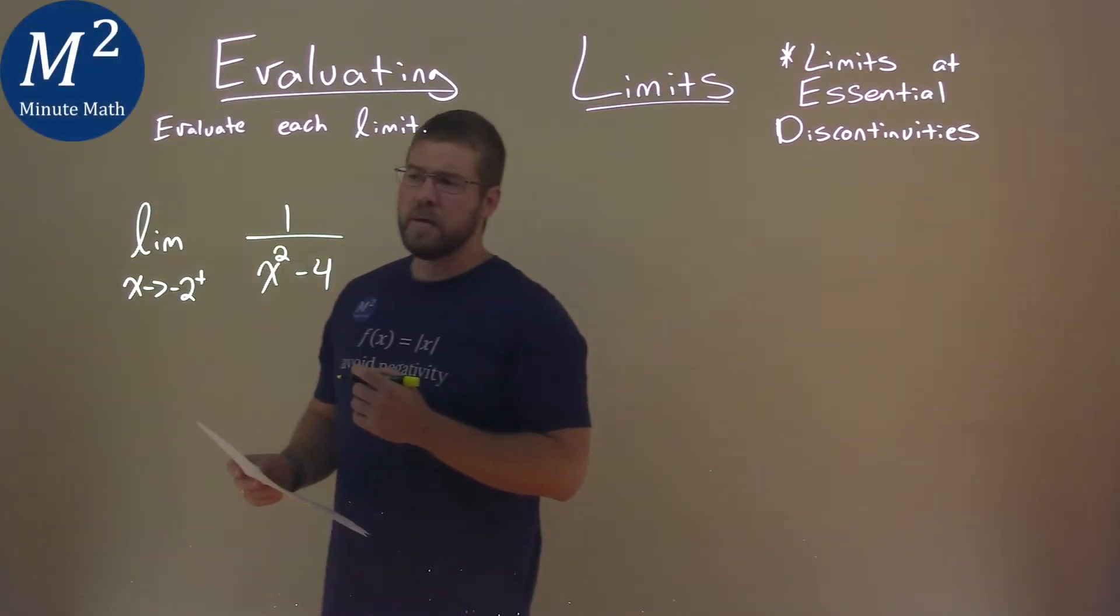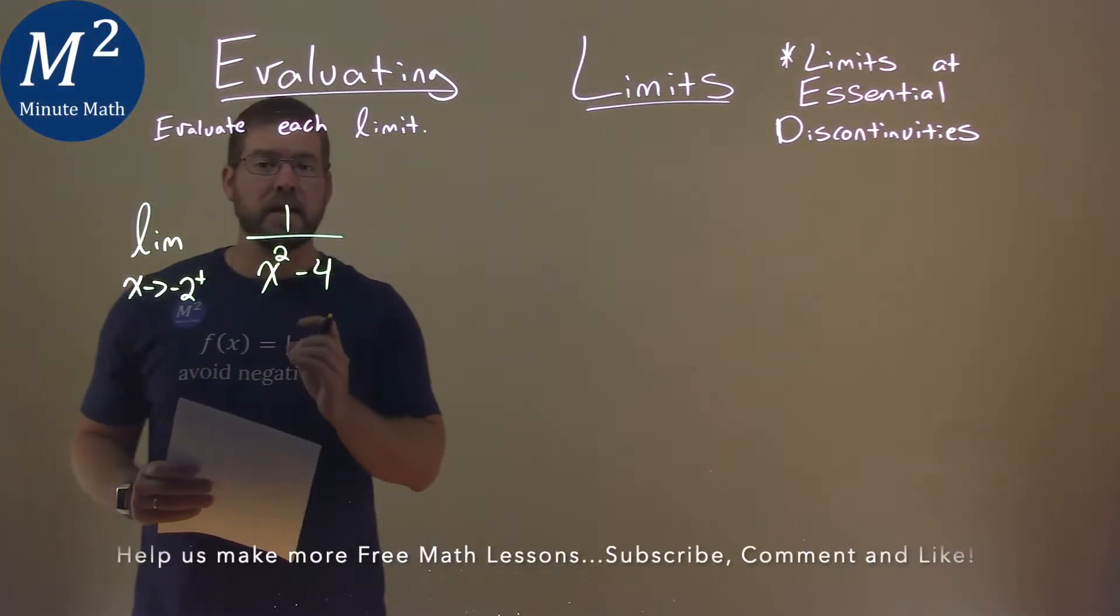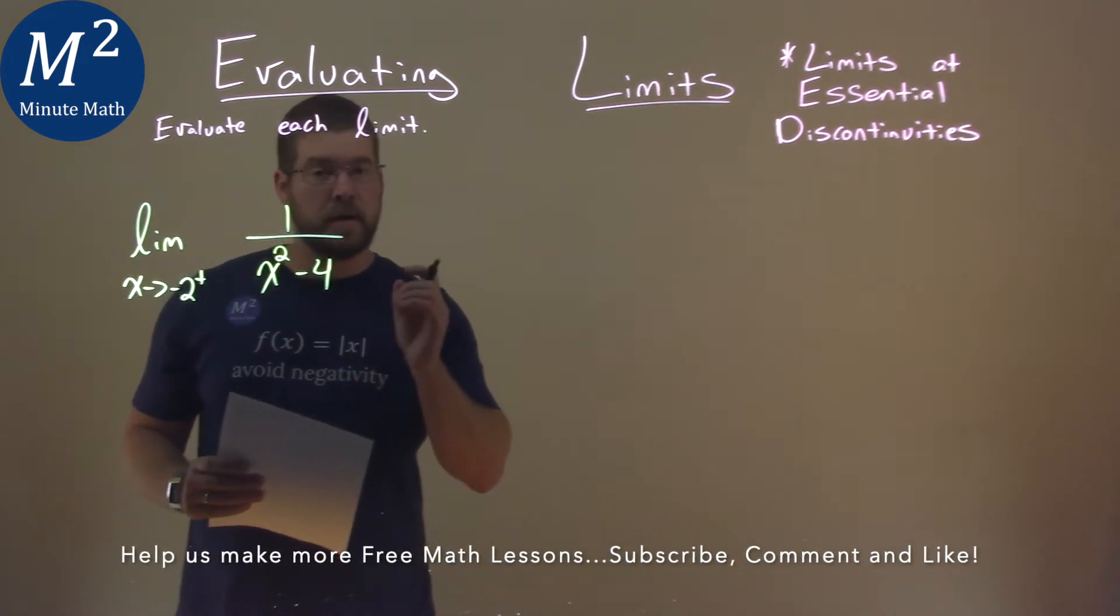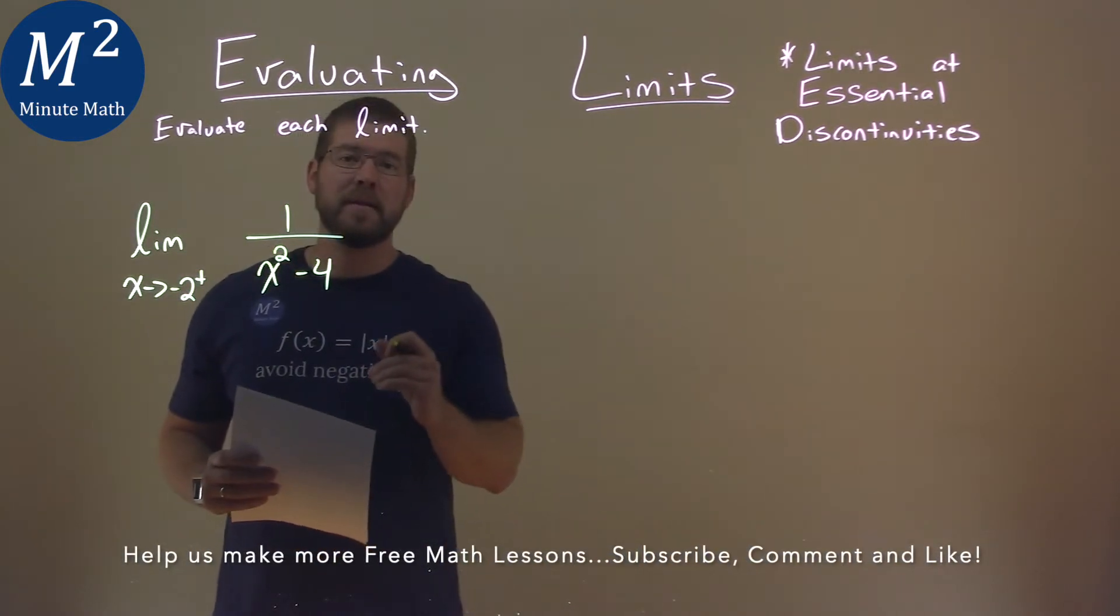We're given this limit right here. The limit as x approaches negative 2 from the right of 1 over x squared minus 4, and we have to evaluate this limit.